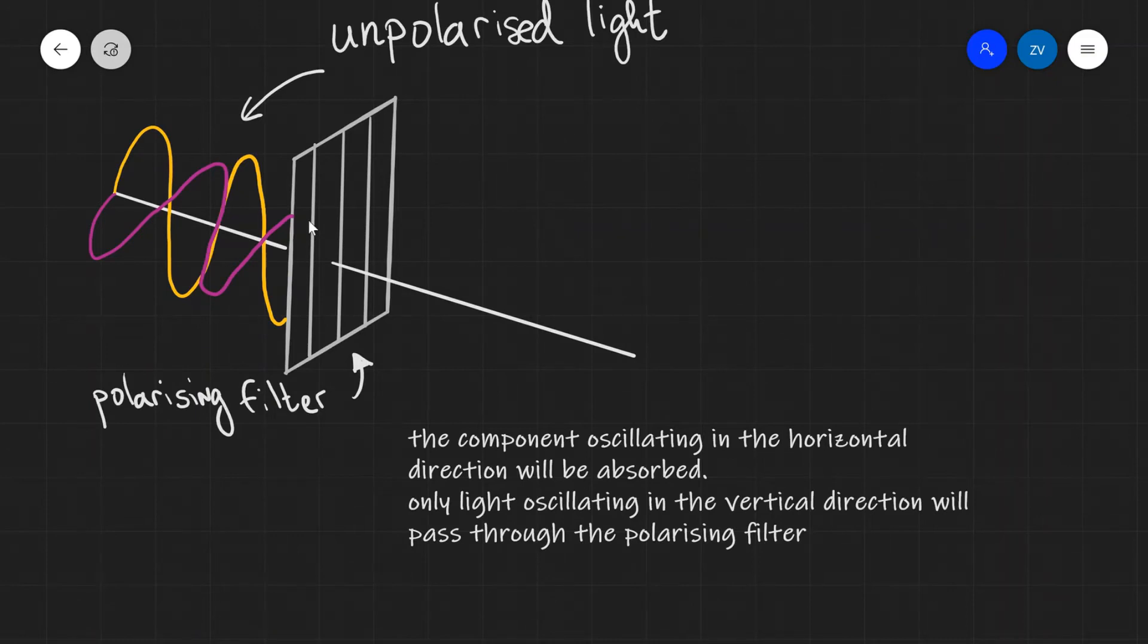And only light which is oscillating in the vertical plane will pass through the polarizing filter. So this means that the light will look like this as it emerges out of the polarizer.